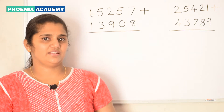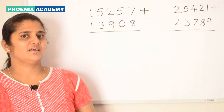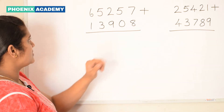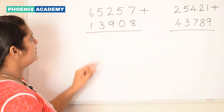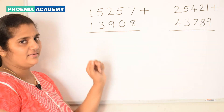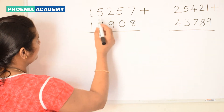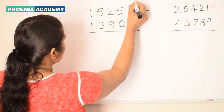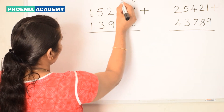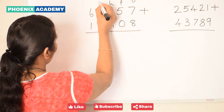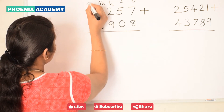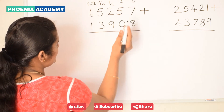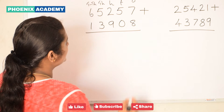Now let's do addition of 5-digit numbers with regrouping. We will add 65,257 and 13,908. 65,257 is 7 ones, 5 tens, 2 hundreds, 5 thousands, and 6 ten-thousands. Let's add the ones values: 7 plus 8 is 15.